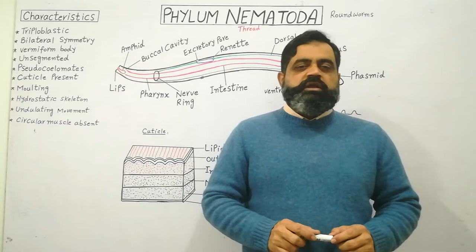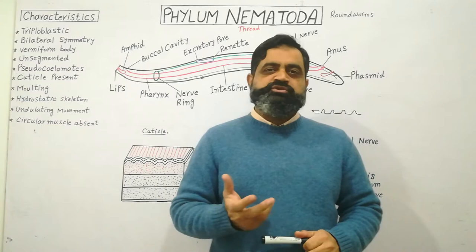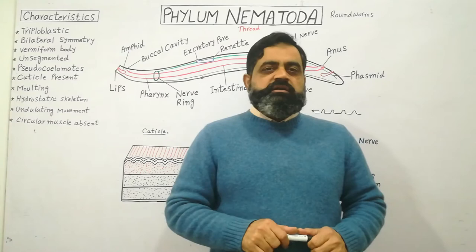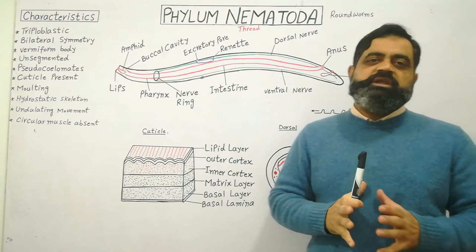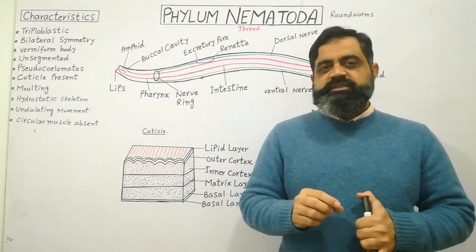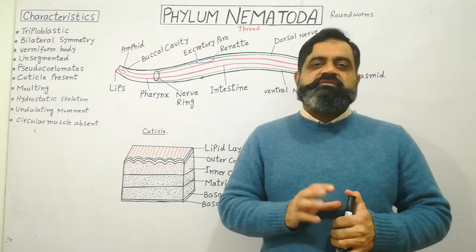Nematoda are animals which belong to Aschelminthes, which are pseudocoelomate animals belonging to Kingdom Animalia. If we look at the literal meaning, 'nemato' means thread, and their common name is threadworms because these animals are worm-like and very thin like threads. They are also commonly called roundworms.